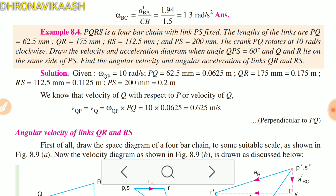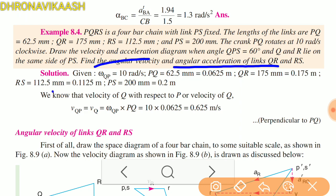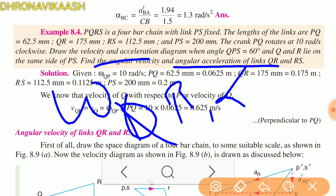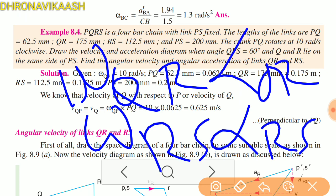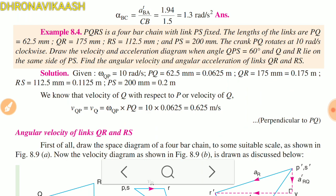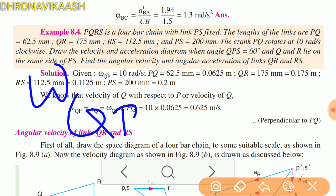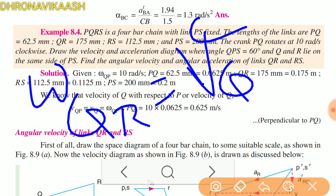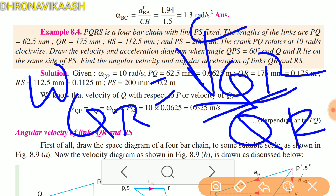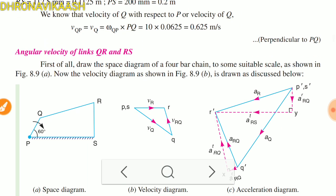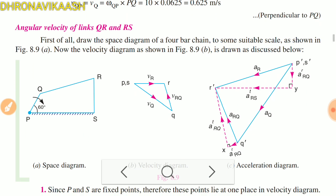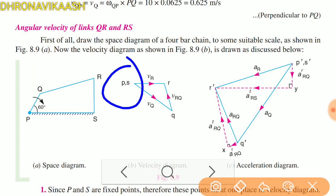Now we will solve the problem: find the angular velocity and angular acceleration of links QR and RS — that is omega_QR and omega_RS. Omega_QR equals V_QR divided by QR; the velocity of QR is related to RS. We will fix the diagram first, fixing points P and S.